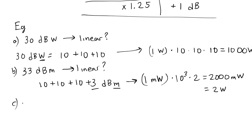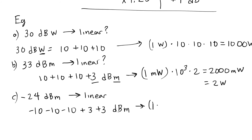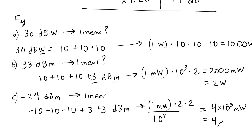Let's do a negative dB example: −24 dBm. I can break this down as −10 −10 −10 −10 + 3 + 3 dBm. Starting from 1 milliwatt, I divide by 10 three times (putting 10³ in the denominator from the four minus-10s... actually −40 + 6 = −34, so let's use −10 −10 −10 −10 + 3 + 3: that's −40 + 6 = −34... the speaker uses −10 −10 −10 −10 + 3 + 3). Starting from 1 milliwatt, dividing by 10 four times and multiplying by 2 twice gives 4 × 10⁻³ milliwatts, or 4 microwatts.